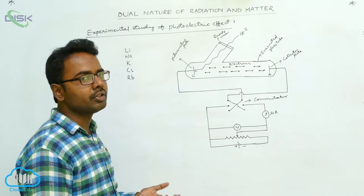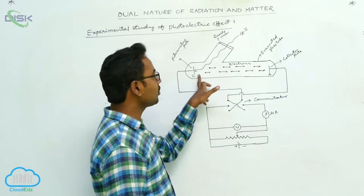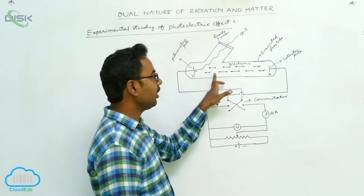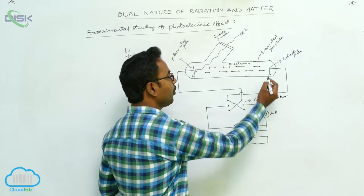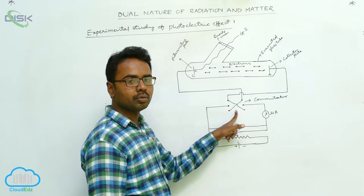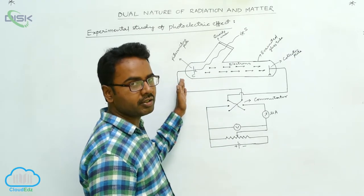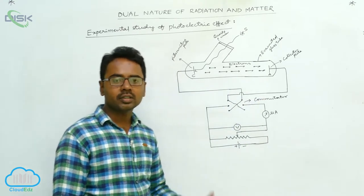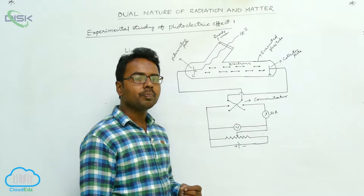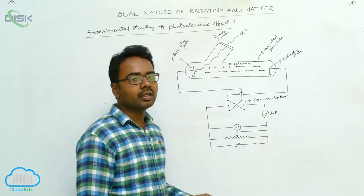The plate made up of these materials is the photosensitive plate, which can emit electrons even with visible light. When this photosensitive plate (emitter plate) is exposed to monochromatic light, it emits electrons which are collected by the collector plate. The polarity of the collector plate can be changed using a commutator arrangement. Electrons received by the collector plate flow in the external circuit, causing electric current to flow.